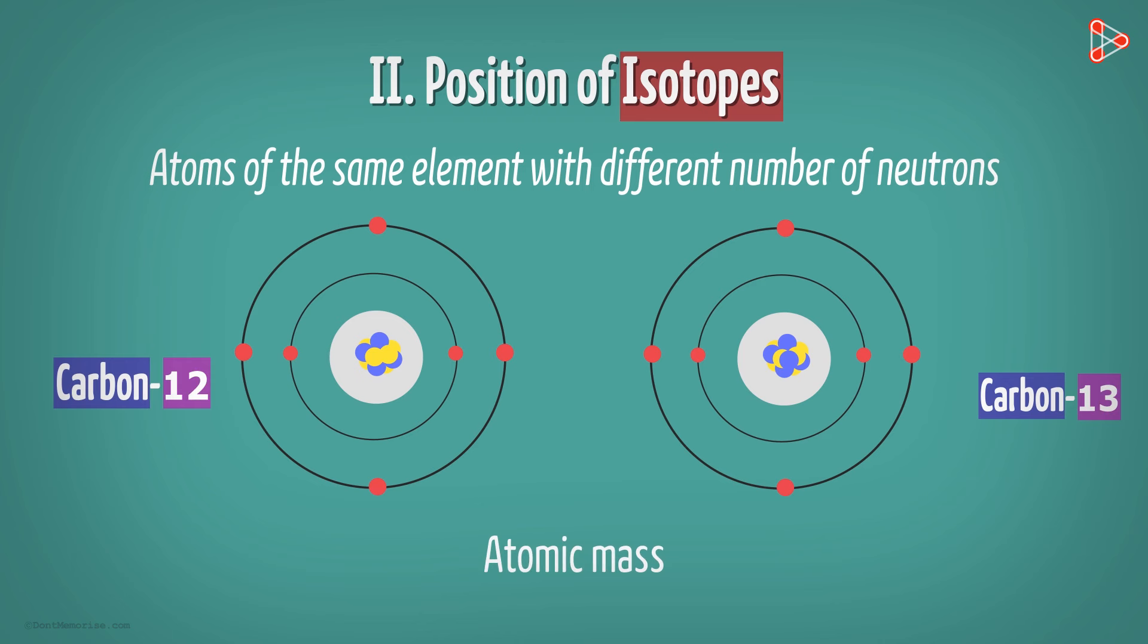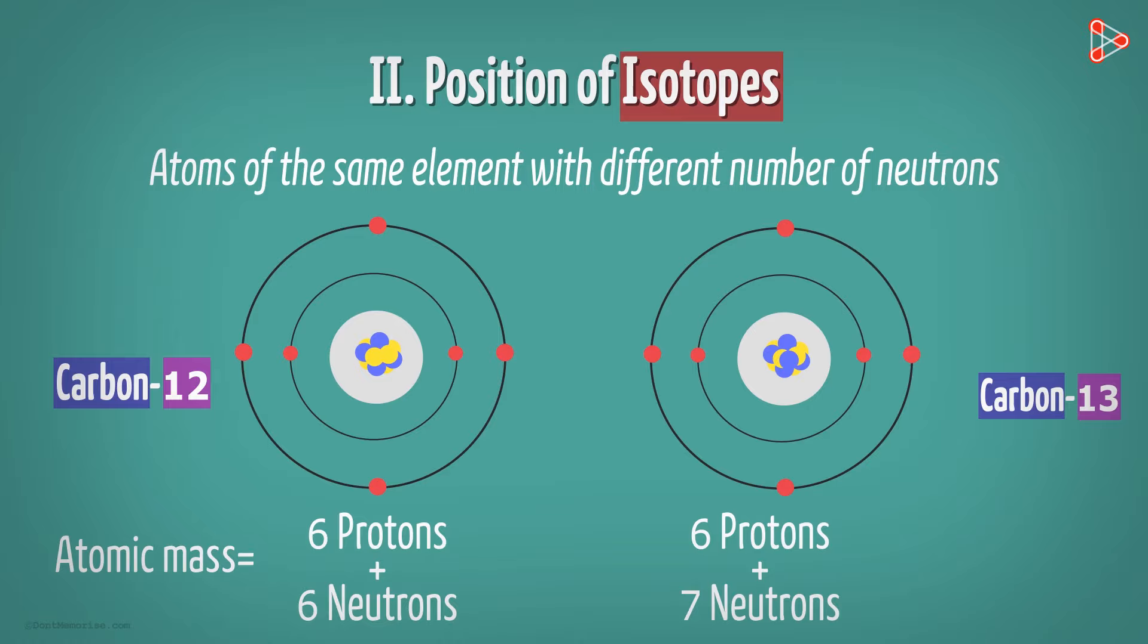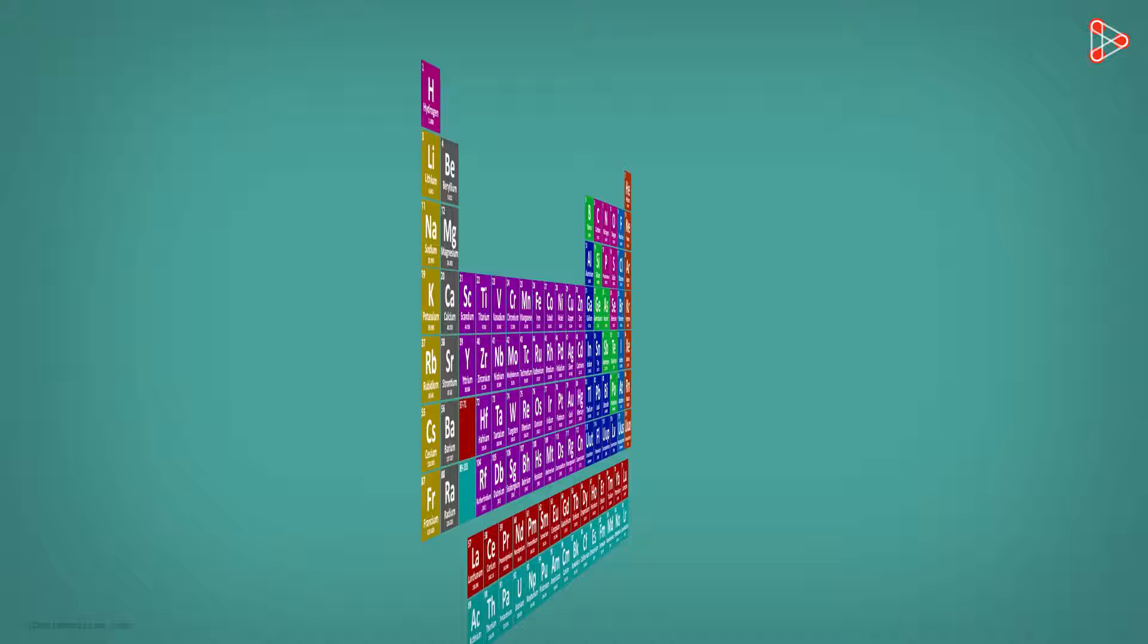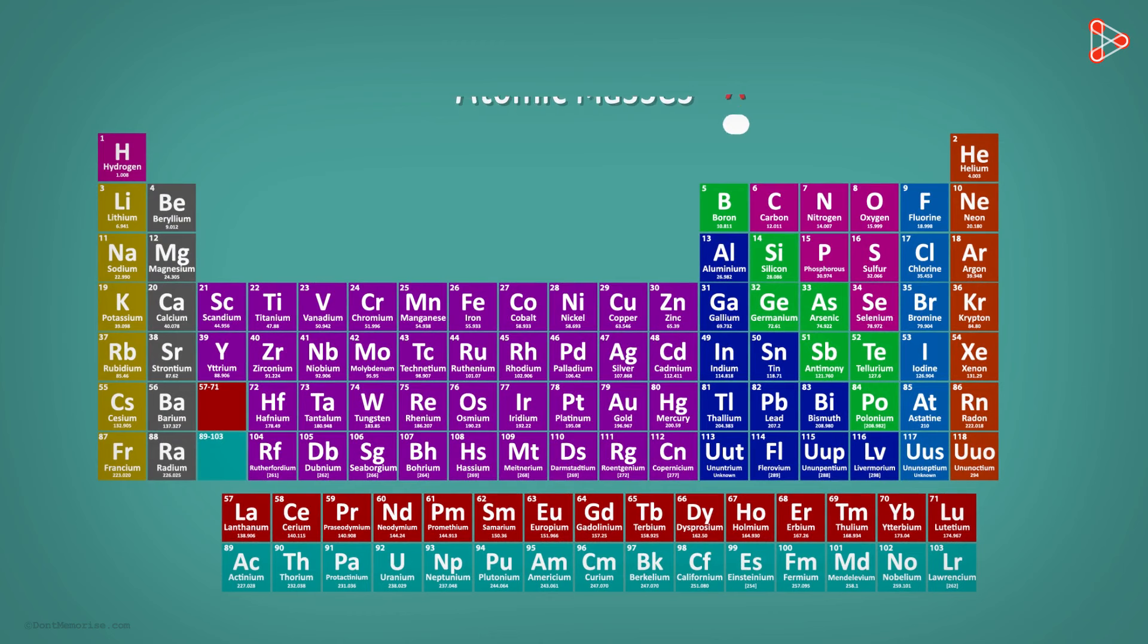Because atomic mass is the sum total of all the protons and neutrons present in the nucleus. Placing isotopes in the table was a limitation. But as we know, in the modern periodic table, the position of elements was no longer based on atomic masses. They were based on atomic numbers.